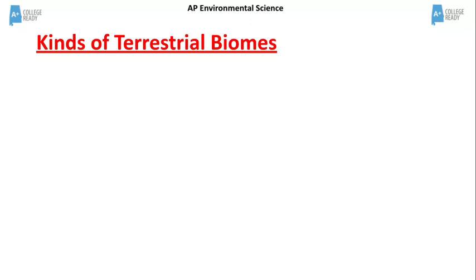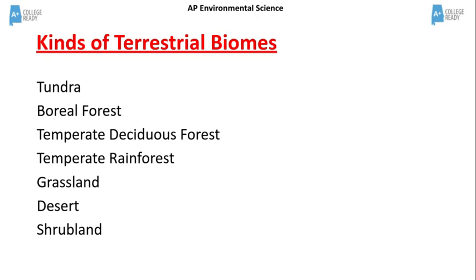Seven kinds of terrestrial biomes include tundra, boreal forest — also called taiga — temperate deciduous forest, tropical rainforests, grassland, desert, and shrubland.